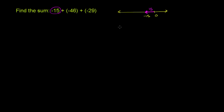Let's do the same thing for negative 46. Let me draw my number line. Zero is right over here, and negative 46 is going to be someplace over here. Same exact idea — the distance between negative 46 and 0, or the absolute value of negative 46, is 46. Its direction is to the left, which is why it is the number negative 46. The negative tells you whether you're to the left or the right of 0, while the absolute value tells you how far.